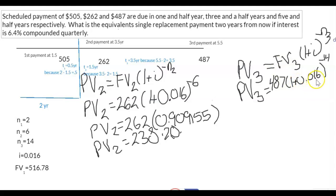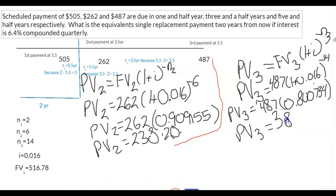The interest is 0.016. It does not change. The N is 14. So you solve this. It gives you that. Finally, PV3 is equal to 389.96.